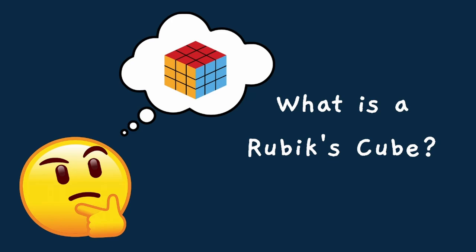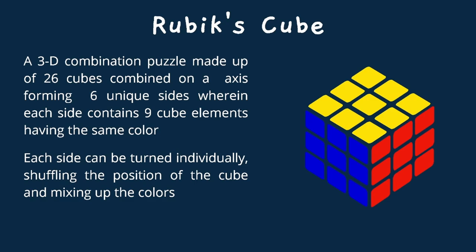What is a Rubik's Cube? A Rubik's Cube is a 3D combination puzzle made up of 26 cubes combined on a rotated axis, forming a 3x3 cube consisting of 6 unique sides, wherein each side contains 9 cube elements having the same color. The way the mechanism works is that an internal pivot mechanism enables each face to turn independently, thus mixing up the colors and shuffling the entire cube. The aim is to come up with move sequences to shuffle back to its solved state, wherein each side contains the 9 cube elements having the same color.